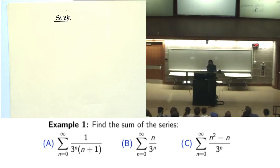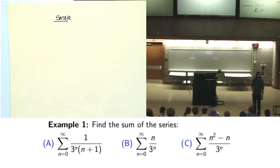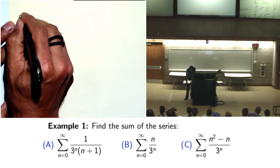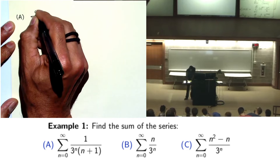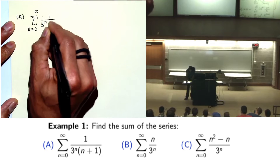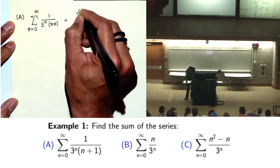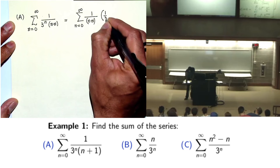We have to compute the sum of the series, which is written as 1 over 3 to the power n times n plus 1. First thing we need to do is identify the series — what type of series it is. Part A: series n varies from 0 to infinity, 1 over 3 to the power n times n plus 1. I can rewrite this series as n plus 1 times one-third raised to power n.